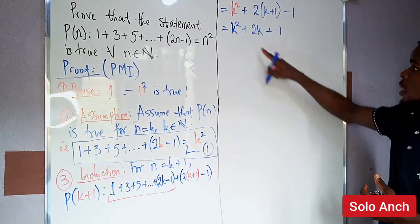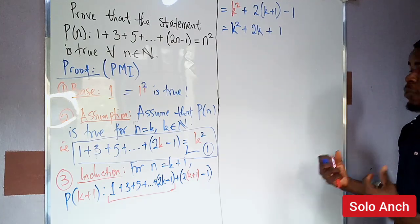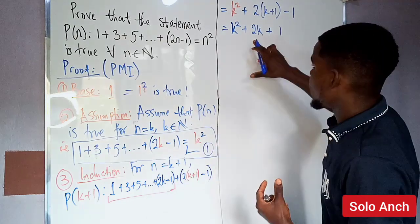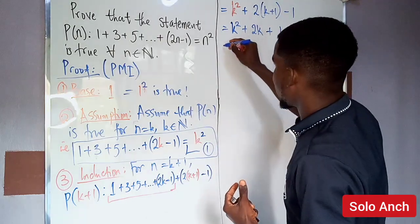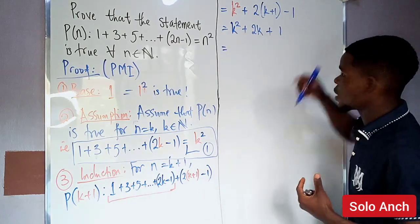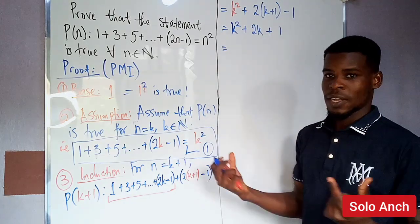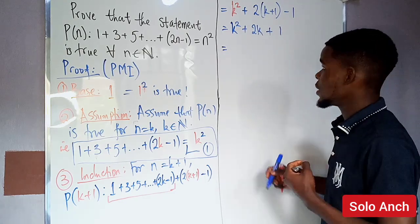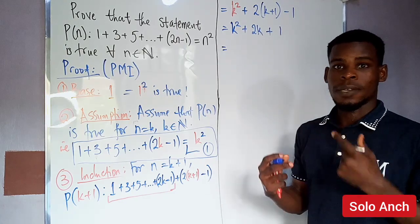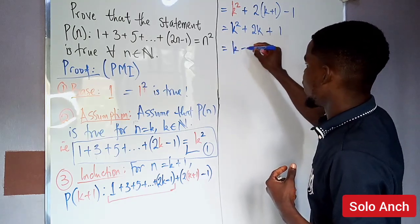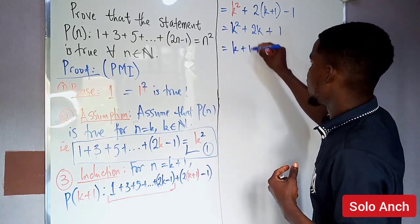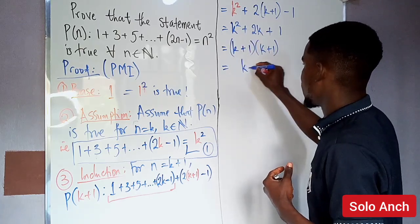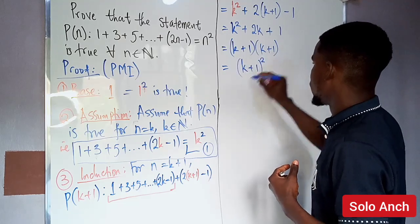We have k squared plus 2k plus one. To factorize this quadratic, we look for two factors that multiply to one and add to two — those factors are one and one. So we can write this as (k plus one)(k plus one), which equals (k plus one) squared.